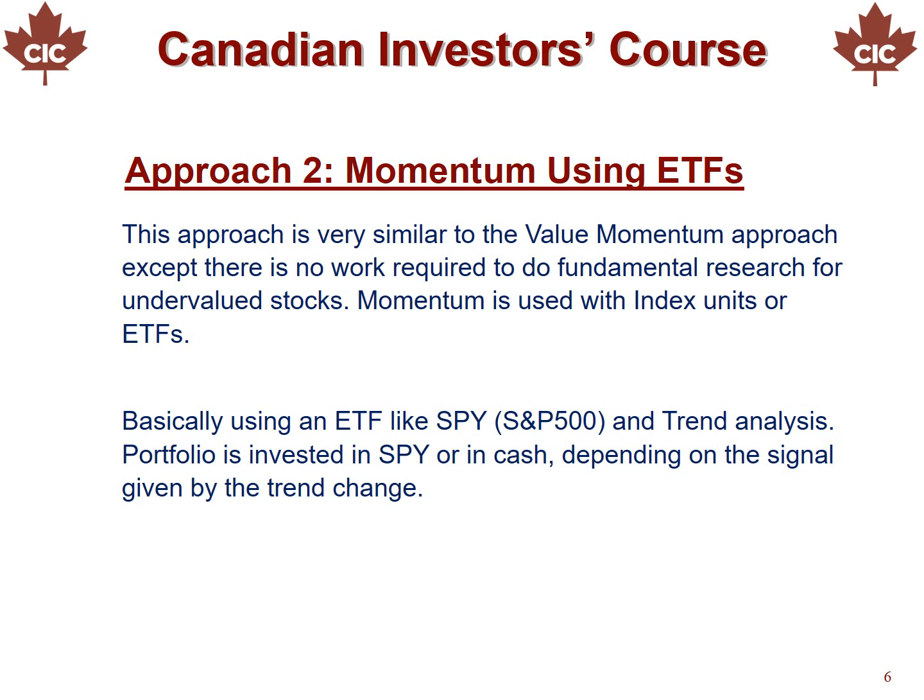The next approach is momentum using ETFs. This approach is very similar to the previous value momentum approach, except there is no work required to do fundamental research for undervalued stocks — the stocks are replaced by ETFs. Basically, using an ETF like SPY, which represents the S&P 500, and trend analysis, this gives a portfolio that either invests in SPY or cash, depending on the signal given by the trend change.